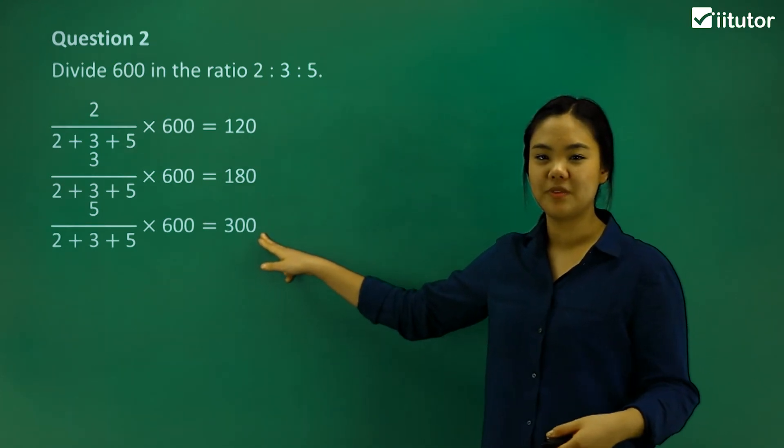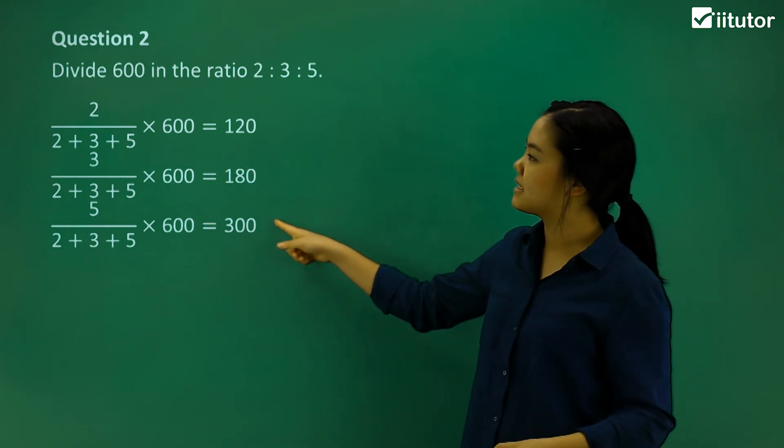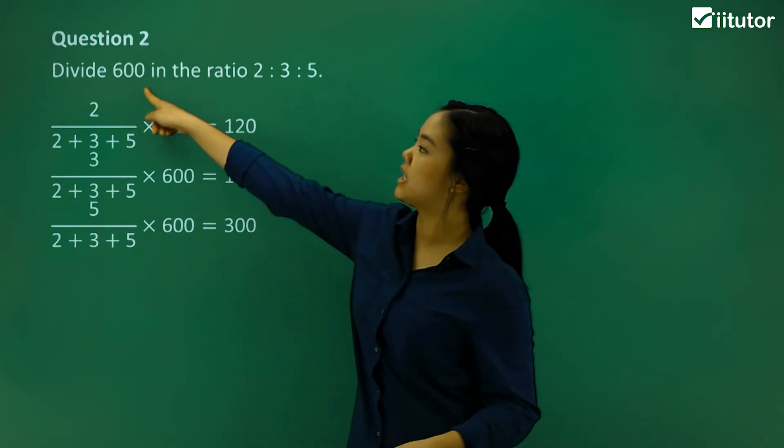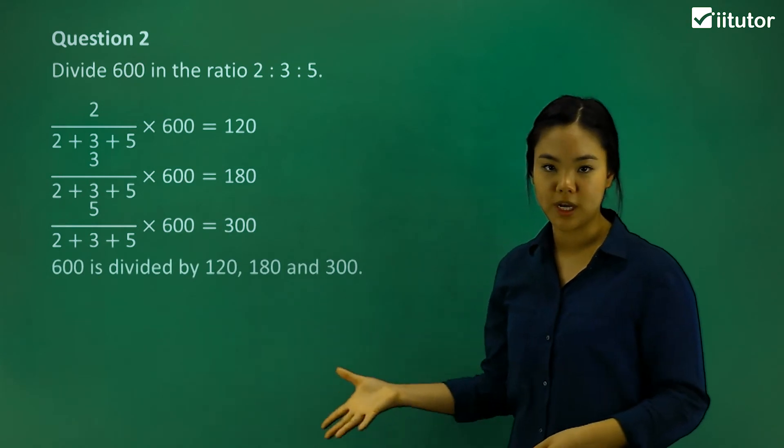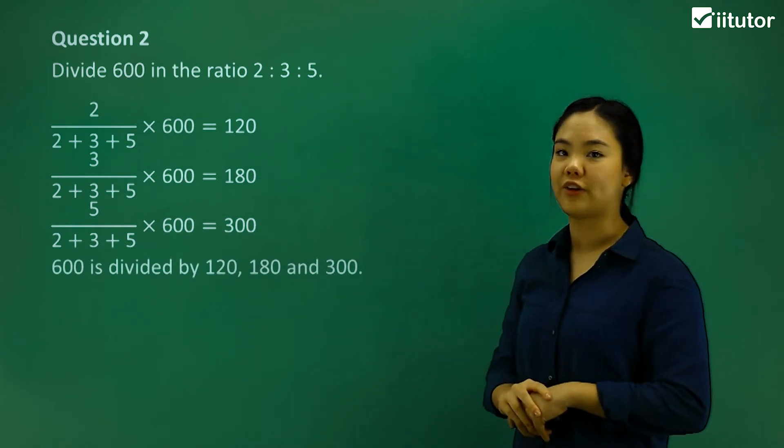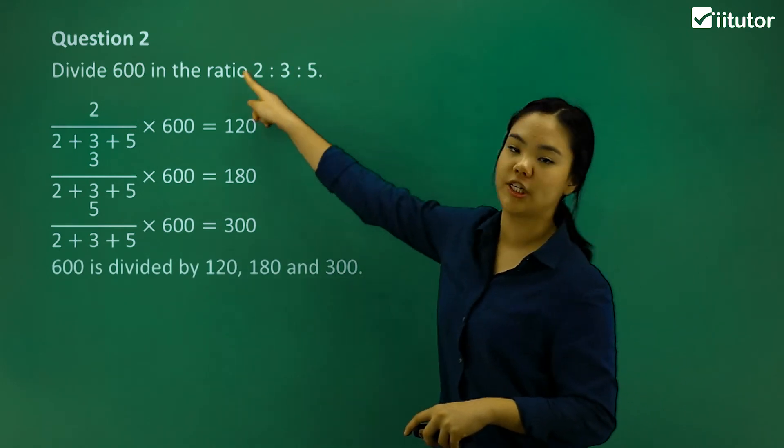Okay, do we understand that? Okay, so what we can say is therefore 600 is divided by 120, 180 and 300 in that ratio.